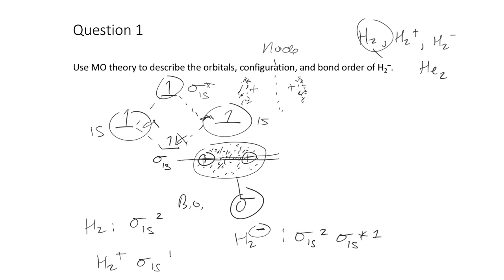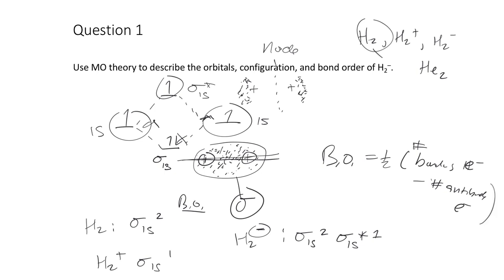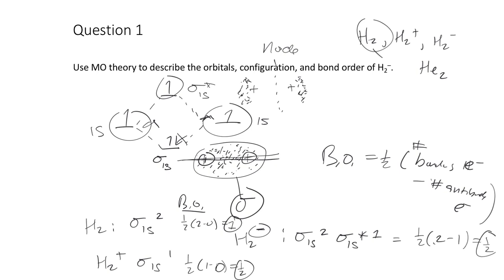Bond order is how many net bonding electron pairs there are. The bond order formula is ½ times (bonding electrons minus antibonding electrons). For H2: ½(2−0) = 1, a single bond. For H2+: ½(1−0) = ½. For H2-: ½(2−1) = ½. So H2+ and H2- have the same bond order of ½.